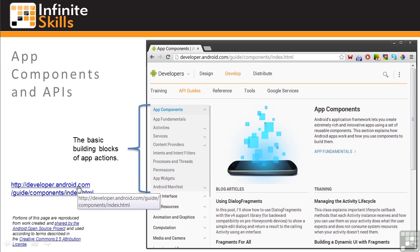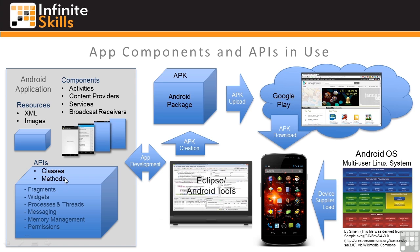This graphic shows the overall flow of how app components and APIs are bundled together to function on mobile devices. Android application components, resources, and APIs are packaged and uploaded to Google Play and downloaded to devices, running on the Android operating system. We've looked at how you use Eclipse and the Android tools to develop the components, resources, and API references for your apps, and how you create an APK, or Android package, that you upload to Google Play using the developer console.